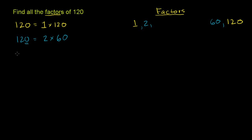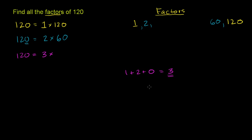Now let's think about whether 3 is a factor — is 120 equal to 3 times something? We could just try to divide, but hopefully you already know the divisibility rule. To figure out if something is divisible by 3, you add up its digits, and if the sum is divisible by 3, we're in business. So for 120: 1 plus 2 plus 0 equals 3, and 3 is definitely divisible by 3. So 120 is going to be divisible by 3.